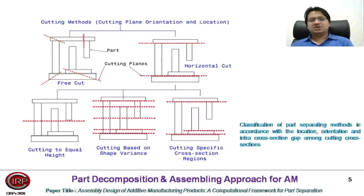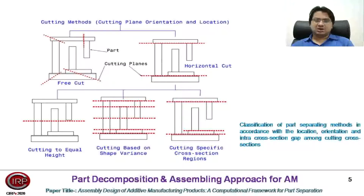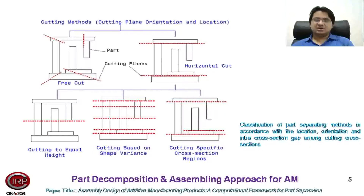This figure explains the classification of cutting methods so that the proper cutting plane orientation and location can be obtained. Basically, cutting methods are of two types: free cut and horizontal cut. Horizontal cut can be divided further into three classes: cutting happening at equal height, cutting happening at the shape variation region, and cutting happening at specific cross-section regions.